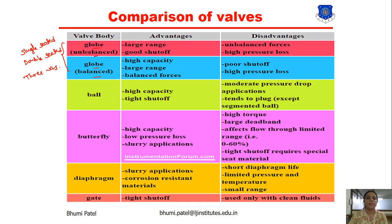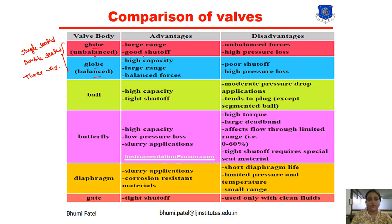In the unbalanced globe valve, the shutoff ratio is good because in the single seated and double seated configurations, we use a plug in the system, giving good shutoff performance. The disadvantage is we can get unbalanced force and high pressure load, because the plug is connected with the valve body and if not properly connected, we get a pressure load.